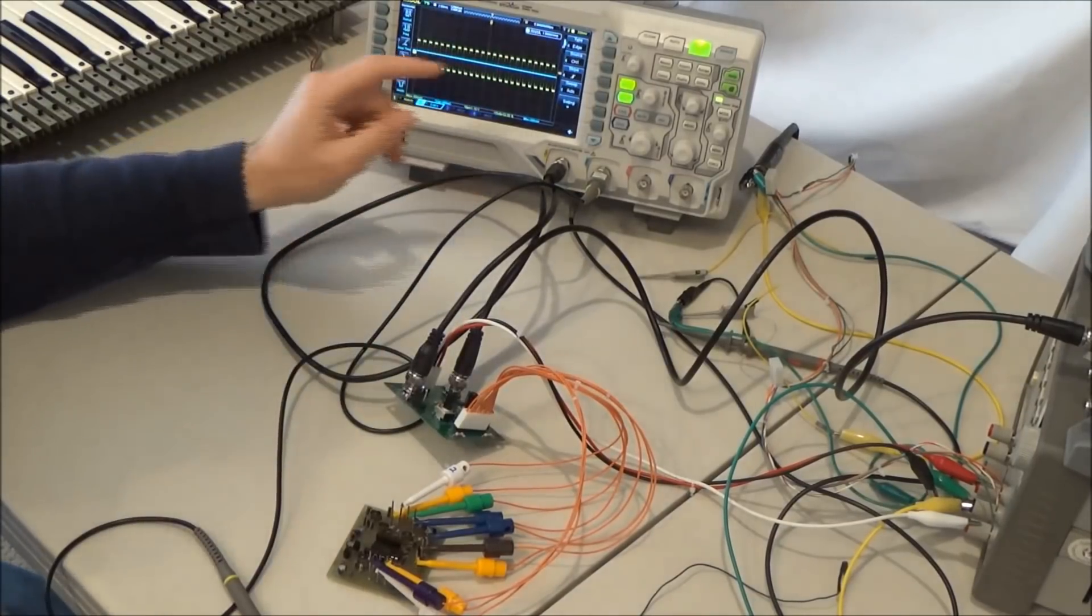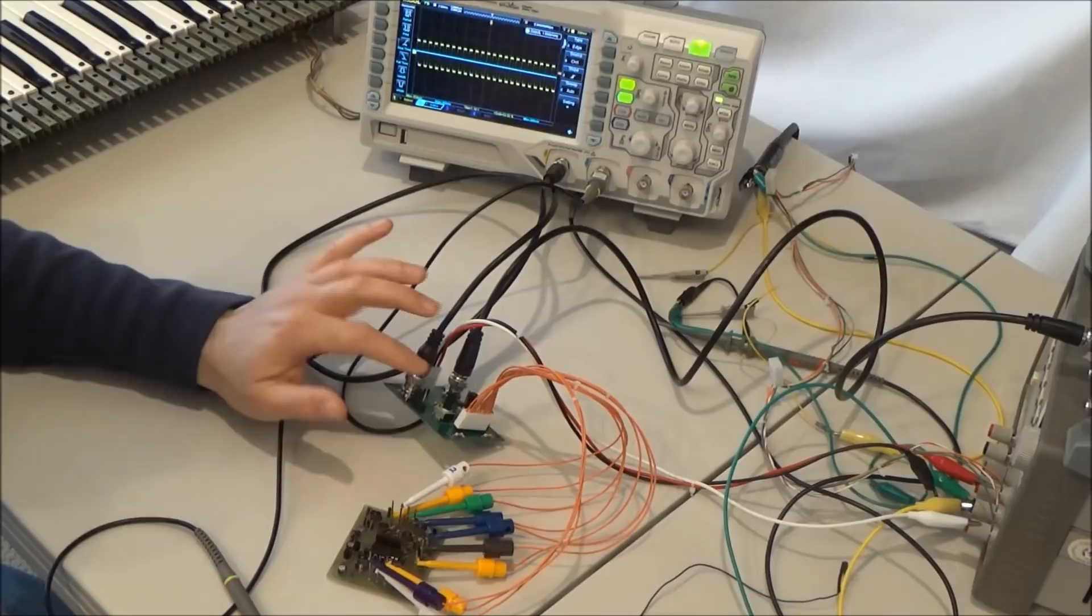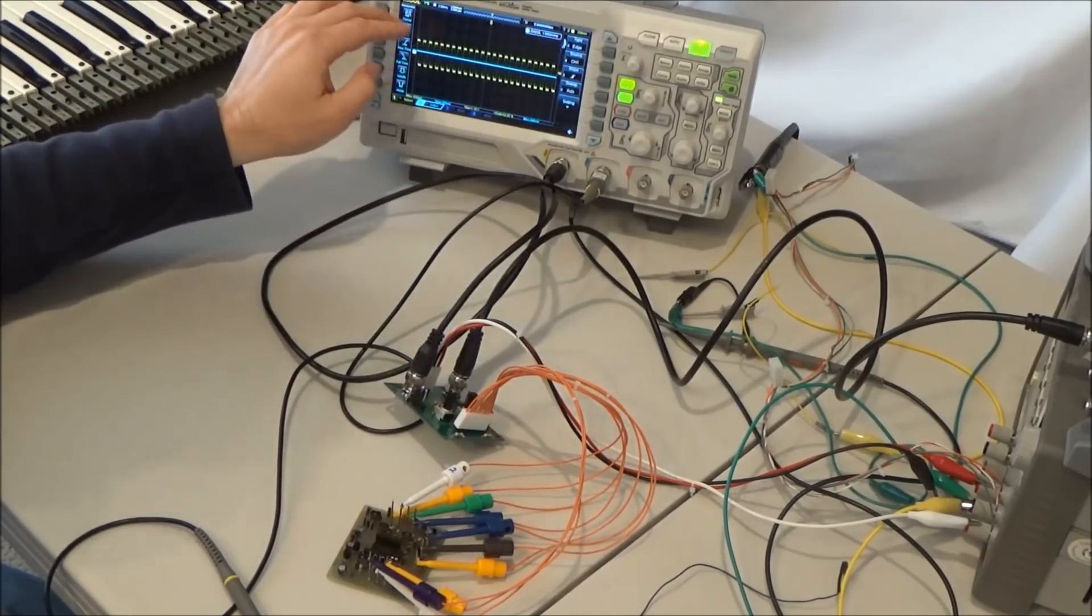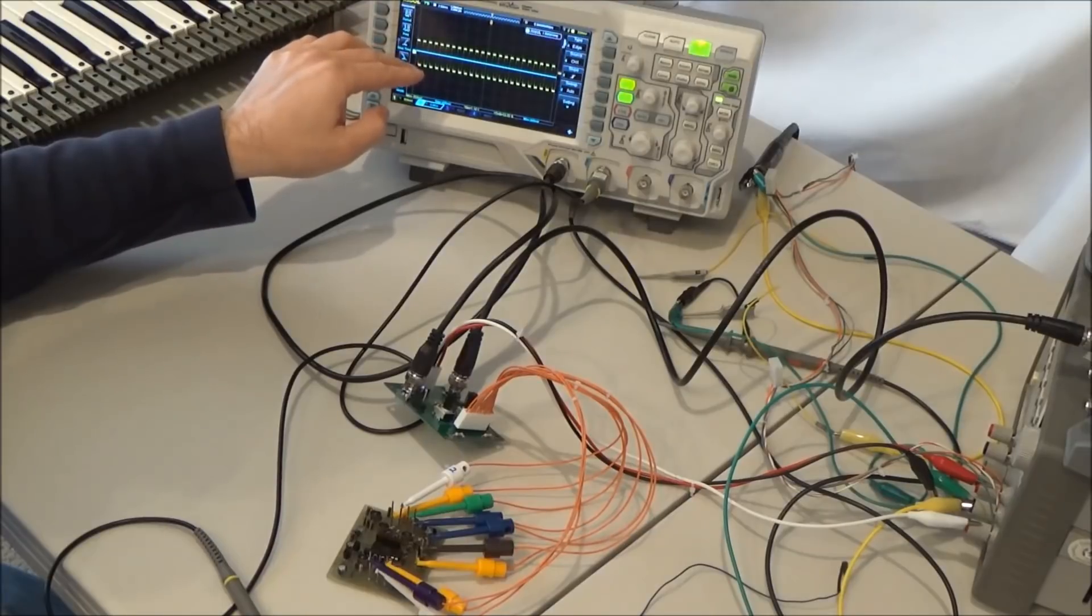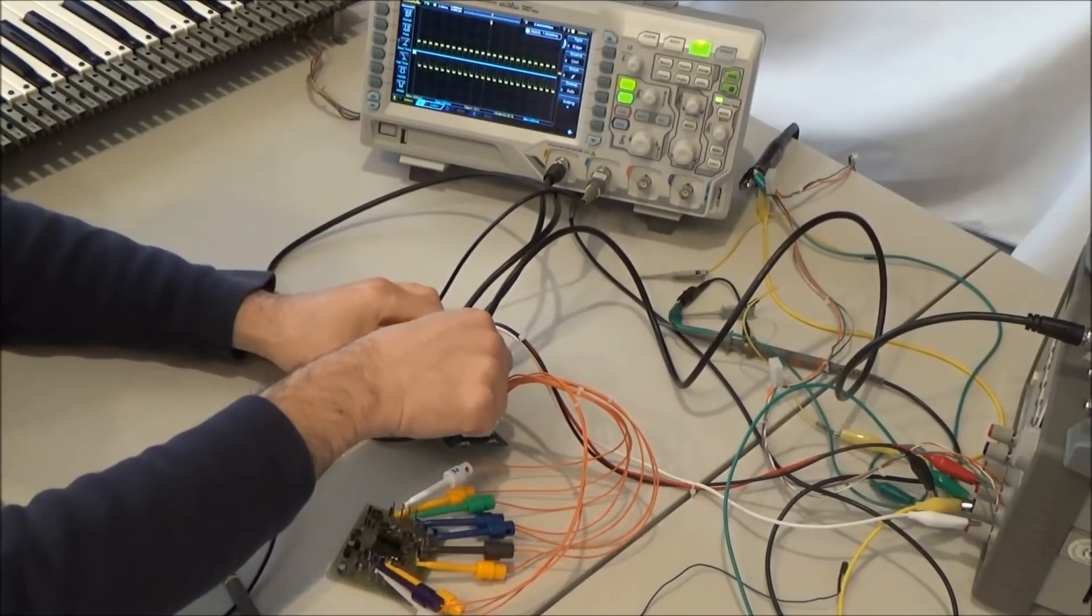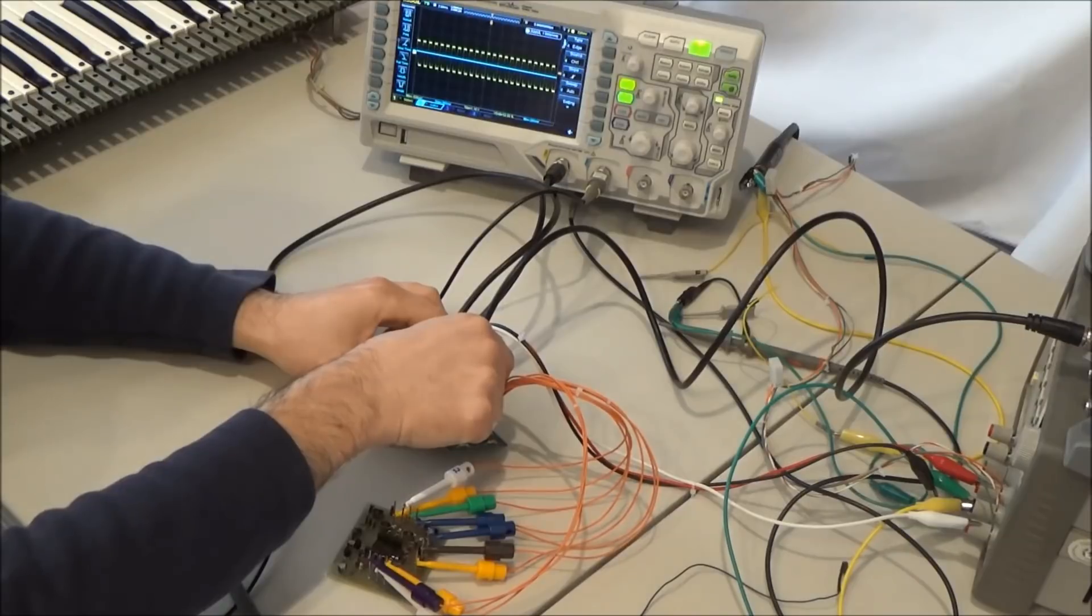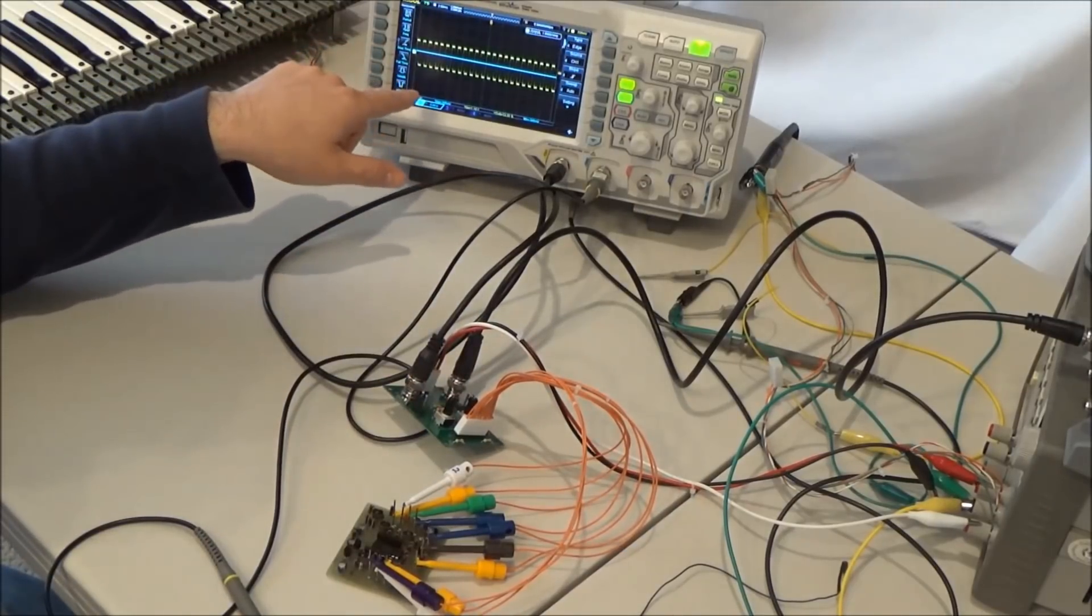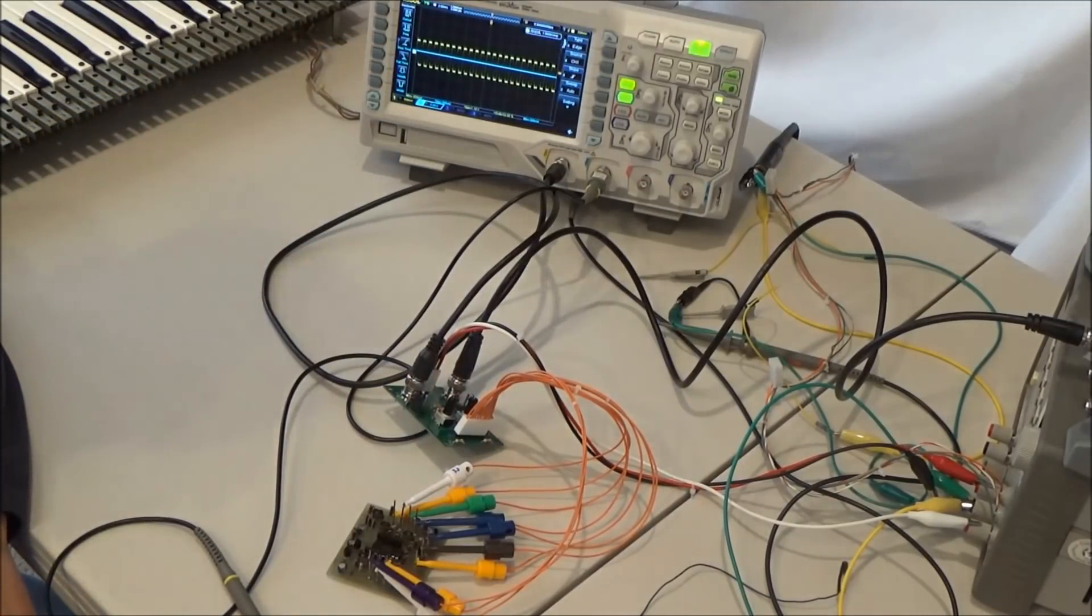I'm feeding the filter a square wave and right now I've got the cutoff frequency fully raised and resonance all the way down. So we're seeing the square wave coming out of the filter as we'd expect. Now I'm going to lower the cutoff frequency and I'm lowering it and now it's all the way down and you can see that there's no change to the output waveform. So our problem is definitely with the filter.